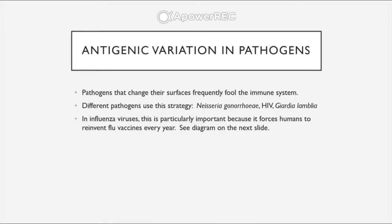Pathogens often have to change their outside markers. The immune system identifies a pathogen based on what's on the outside of the cell or virus. If the pathogen can slightly change these chemical markers — by altering structure, shape, or chemical makeup — it can disguise itself from the immune system. Different pathogens use this strategy, from the bacterium Neisseria gonorrhoeae to the virus HIV to the eukaryotic Giardia lamblia. In influenza viruses, this forces us to develop new flu vaccines every year as new antigenic variations emerge.